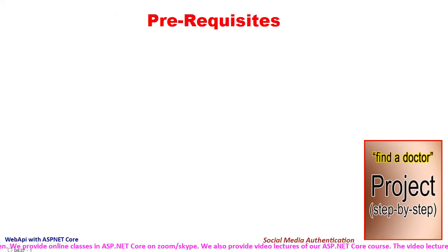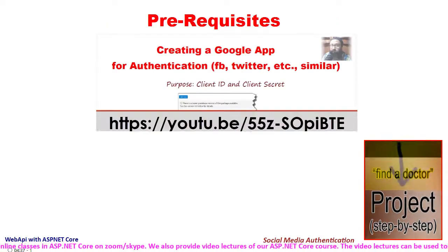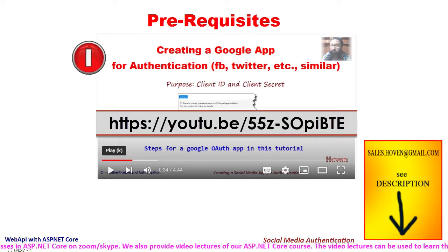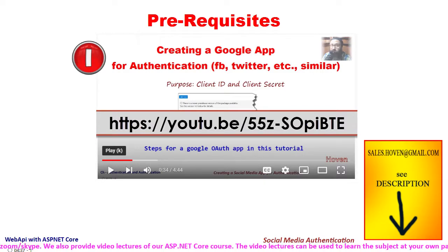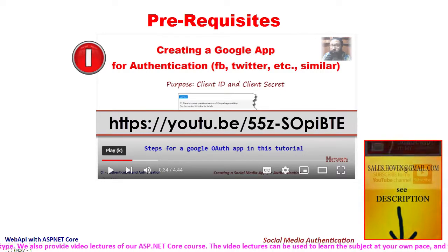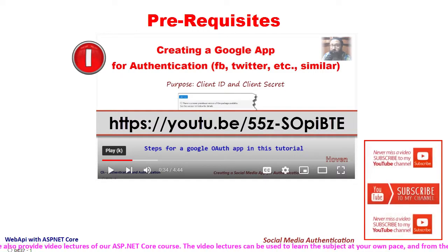First of all, follow the steps explained in this video — the video that you are seeing here — to create an OAuth app on your Google Cloud console.